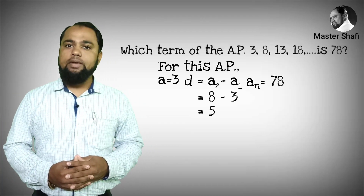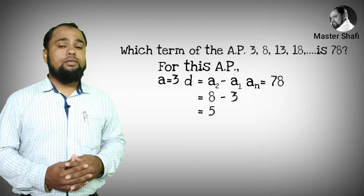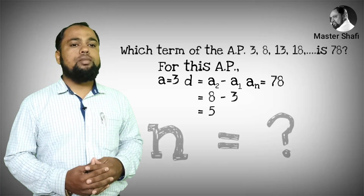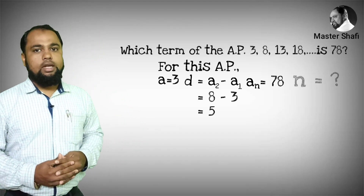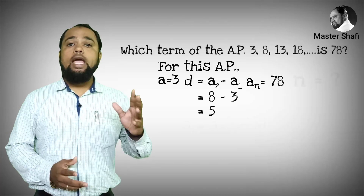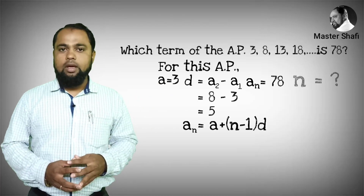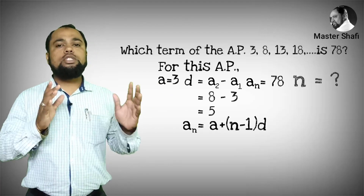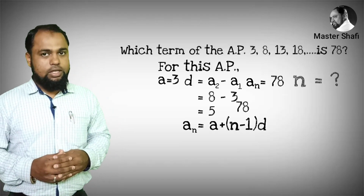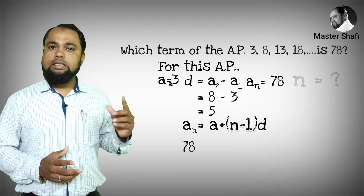We have to find which term 78 is — that is, the value of n. The formula is: a_n equals a plus (n minus 1) into d. Substituting the values, a_n is 78 and the value of a is 3.